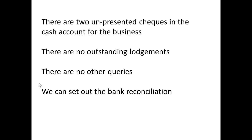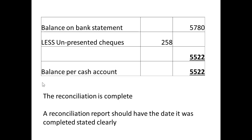Those are two unpresented checks. There are no outstanding lodgements and no other queries, so we are ready to set out the bank reconciliation. The balance on the bank statement is £5,780. The two unpresented checks total £258, so subtracting those gives an answer of £5,522. The balance on the cash account was also £5,522, so the two figures agree, meaning the bank reconciliation has been successfully carried out.